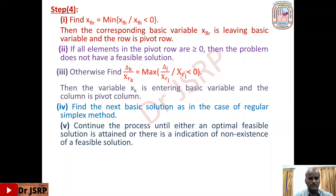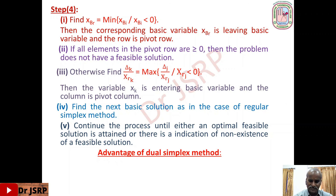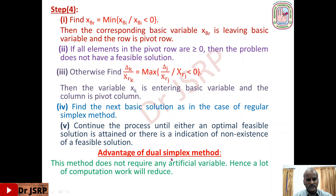Continue the process until either an optimal feasible solution is attained or there is an indication of non-existence of a feasible solution. So this is the dual simplex method. It is not a general method and has its restrictions. The advantage of this method is that it does not require any artificial variables — if constraints are of greater-than-or-equal-to type, we convert them to less-than-or-equal-to type without adding artificial variables, hence a lot of computation work is reduced.